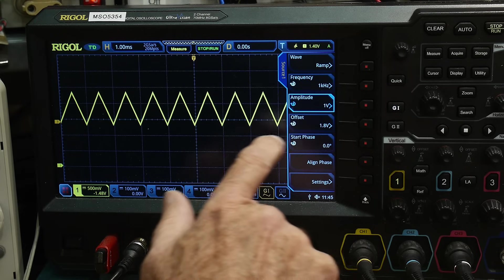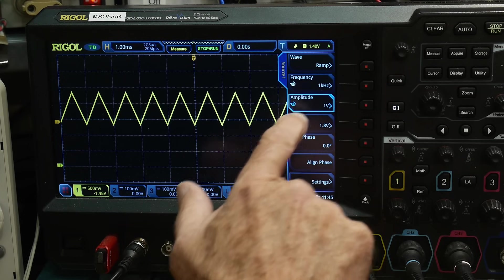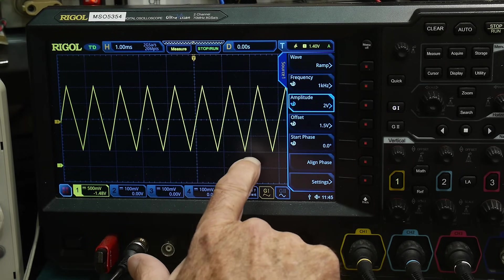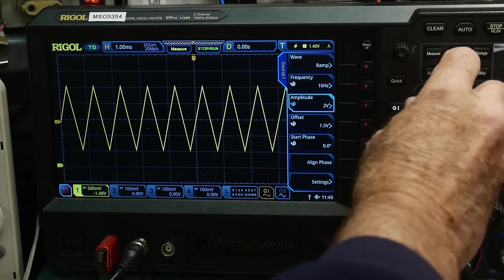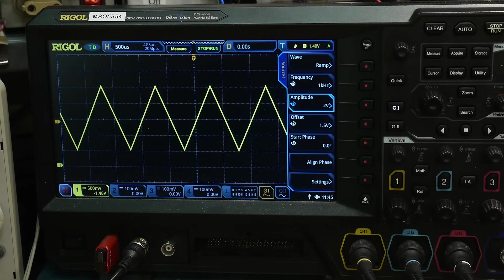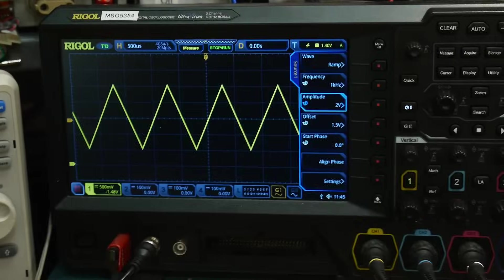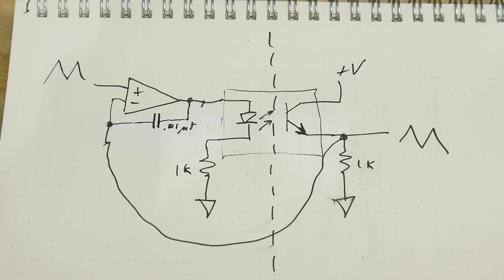Let's input a little bit bigger signal here. Let's put in a two volt signal. Yeah, there we go. That looks pretty. So that's what we now have. We have a very linear system by putting on that feedback.